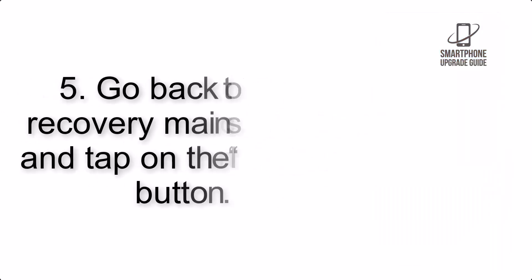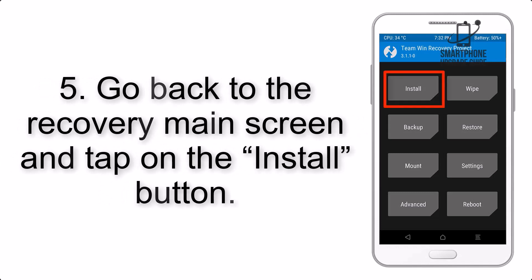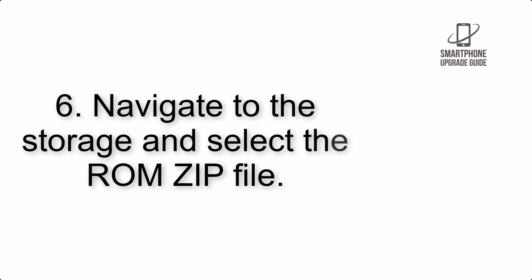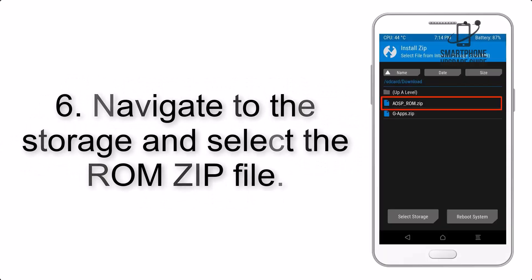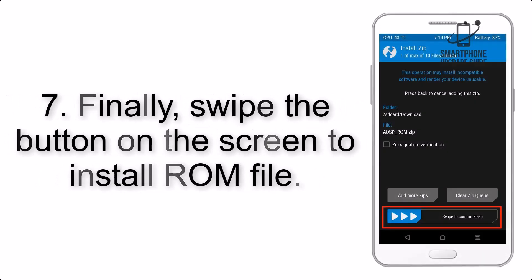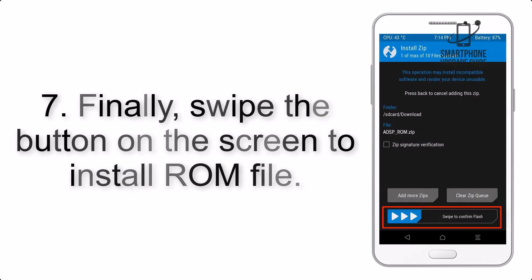Step 5: Go back to the recovery main screen and tap on the Install button. Step 6: Navigate to the storage and select the ROM zip file. Step 7: Swipe the button on the screen to install the ROM file.